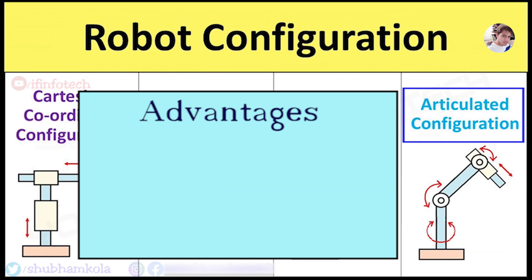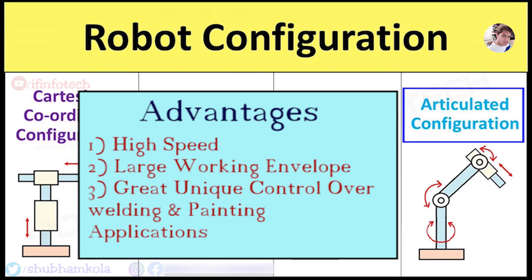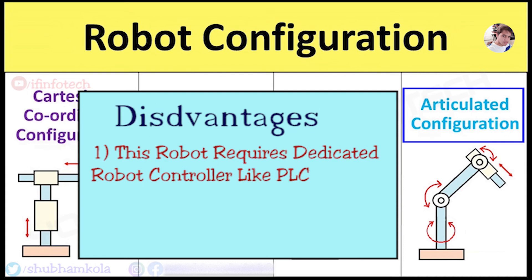Now the advantages. This robot has high speed and large working envelope. Great control over welding and bending applications. The disadvantage is it requires dedicated robot controller like PLC.